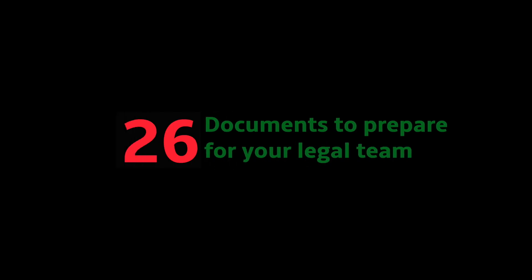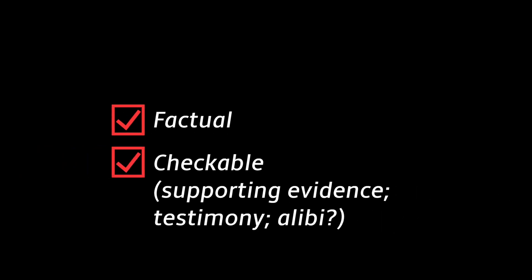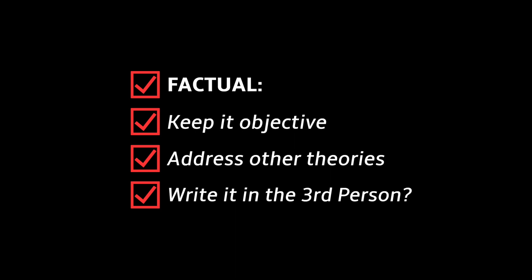In this video I'm going to list 26 documents for you to prepare for your barrister and solicitor, for your legal team. I'm going to split this up into two or three videos because it's going to be quite long. There are two things you should keep in mind when compiling your documents: keep it factual, and ideally keep it checkable — do you have a document, an email, or some other information that proves it? When you keep it factual, keep it objective, and supply or address other theories so that your barrister is not surprised in court.